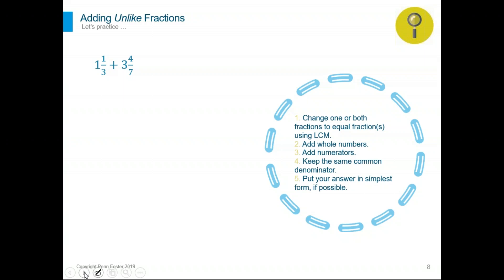If you look at the problem, you have two mixed numbers — one denominator is three and one is seven. That means these fractions are unlike fractions. We are not able to simply add one plus four is five and three plus seven is ten. We cannot do that. We have to find the LCD, the least common denominator, by listing the multiples of three and the multiples of seven. Whatever number comes first to be common between the two lists will be the new denominator.